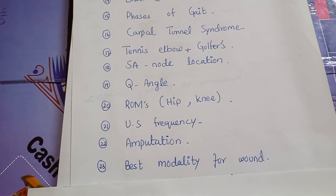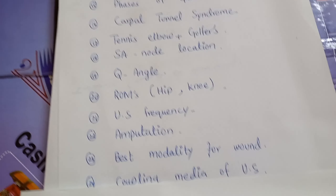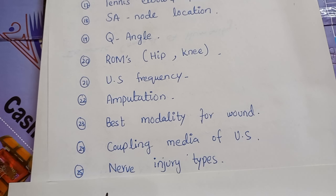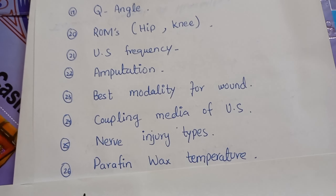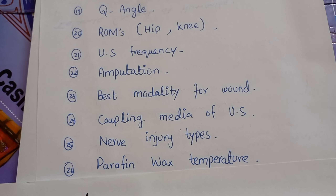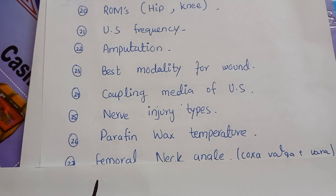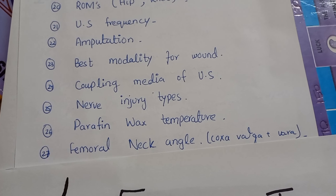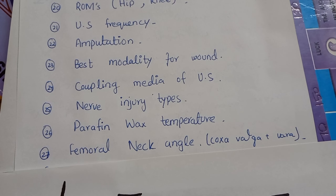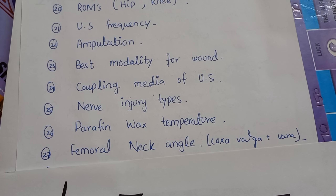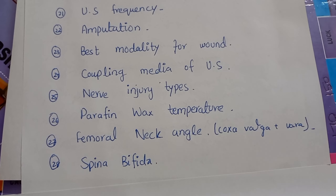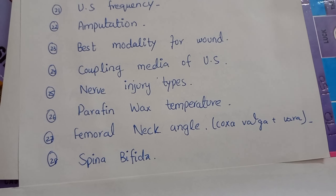Number twenty-five is about nerve injury types. Number twenty-six is about paraffin wax temperature. Number twenty-seven is about femoral neck angle — coxa valga and coxa vara. Number twenty-eight is about spina bifida.